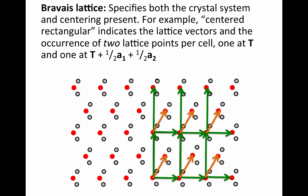A critical term that we're going to use throughout this class is Bravais lattice. The Bravais lattice specifies both the crystal system and the centering present. So for example, in this system, we would describe this as a centered rectangular Bravais lattice. This indicates the character of the lattice vectors, specifically that they're orthogonal to each other, and additionally informs you if there's a lattice point at the center of the cell.